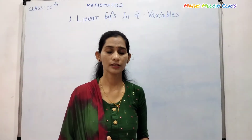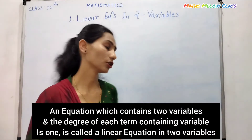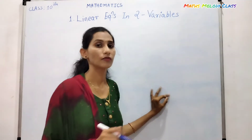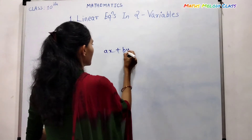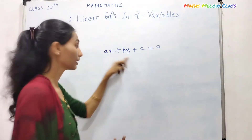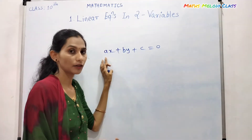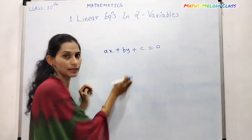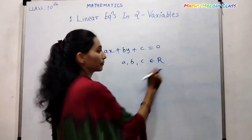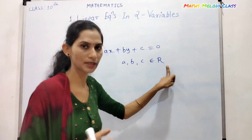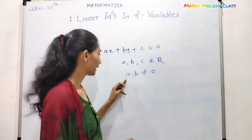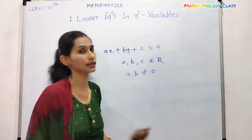Linear equations in two variables are equations which contain two variables and the degree of each term containing a variable is one. Any equation which can be put in the form ax plus by plus c equals zero is called a linear equation in two variables. This is the general or standard form. Here x and y are two variables, their degree is one, a, b, and c are real numbers, and the condition is that a and b are not equal to zero at the same time.